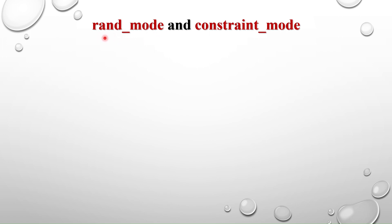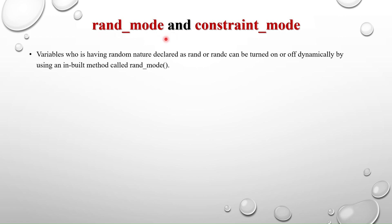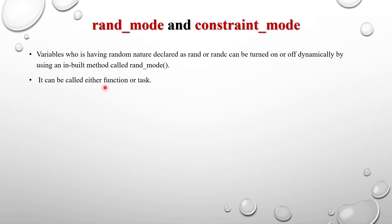Variables declared as rand or randc can be turned on or off dynamically by using an inbuilt method called rand_mode. Being inbuilt means you cannot override it. Dynamically means at runtime we can change the mode of a random variable — we can turn it off or turn it on by calling the method.